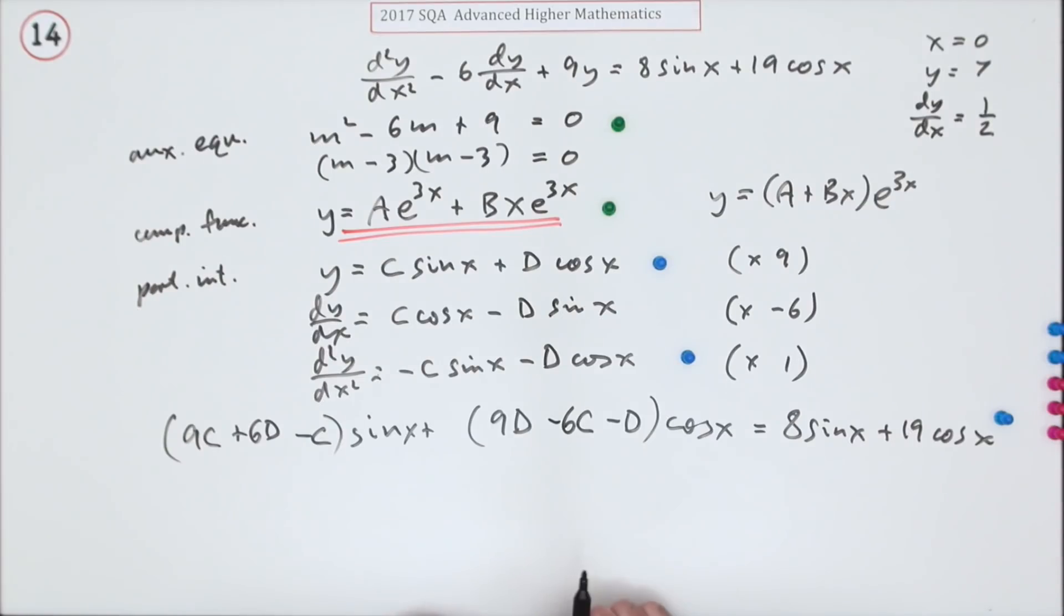Now I can form two equations. If these are meant to be the same then the number of sin here equals the number of sin there. So what have I got here all together? I've got 8C plus 6D should equal 8. And for the cosine terms I've got 9 take away that is 8D, but I've got a minus 6C, I'll just put it in that order: minus 6C plus 8D equals 19. Doing that gets a mark for forming those two simultaneous equations.